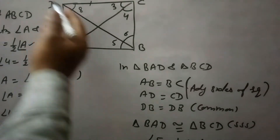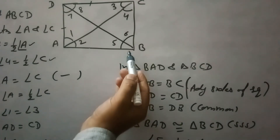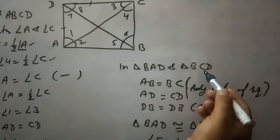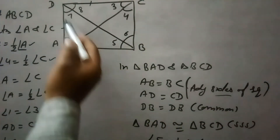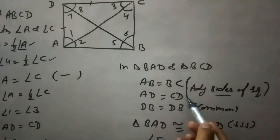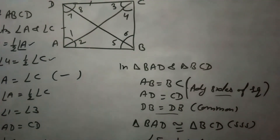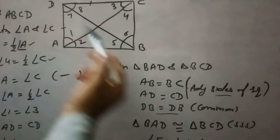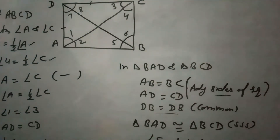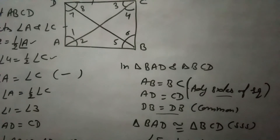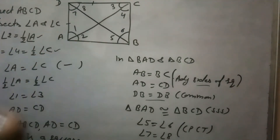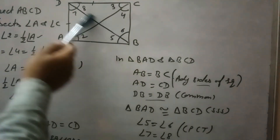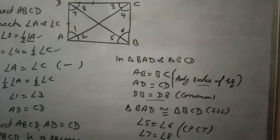Now for diagonal BD, we will take triangle BAD and triangle BCD. In both these triangles: AB equals BC as adjacent sides of a square, AD equals CD as adjacent sides of a square, and BD is common to both. So triangle BAD and triangle BCD are congruent by the Side-Side-Side congruency rule. From here we can say that angle 5 equals angle 6 and angle 7 equals angle 8, meaning BD bisects angle B and angle D.